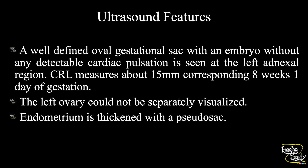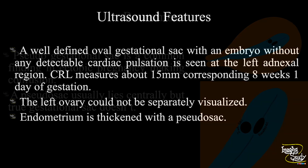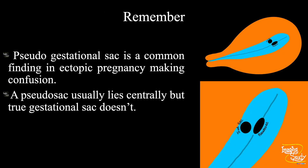So the diagnosis is left adnexal ectopic pregnancy. The take-home message: pseudo gestational sac is a very common finding in ectopic pregnancy, causing confusion. Remember that the pseudo sac usually lies centrally, but the true gestational sac lies on the lateral surface. We know that the blastocyst implants not at the center but at the endometrium, so it lies slightly laterally.